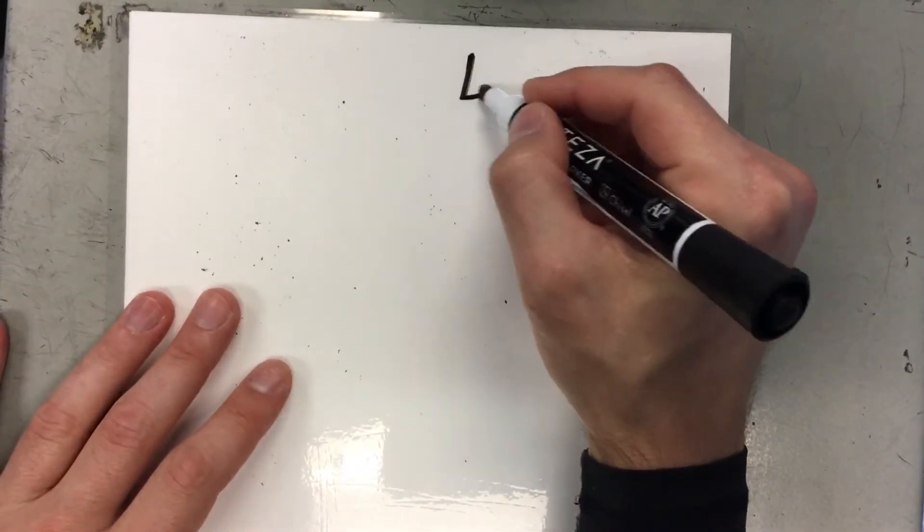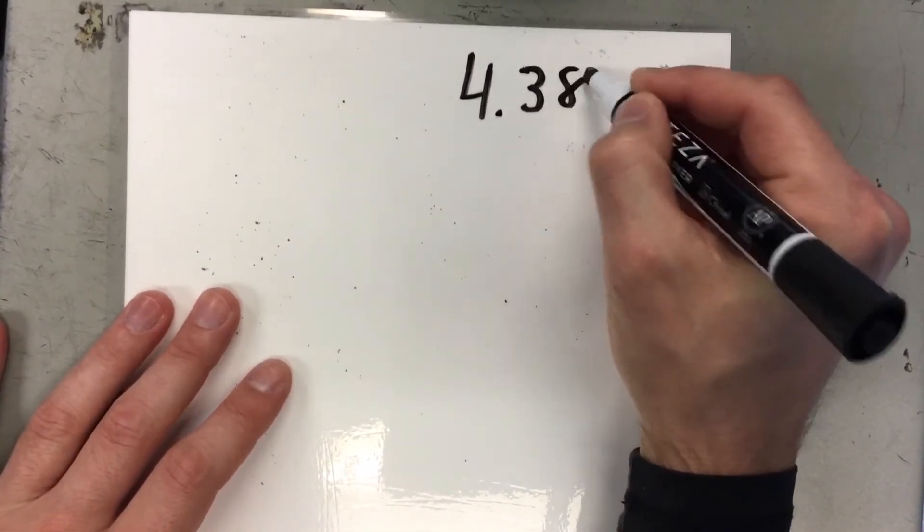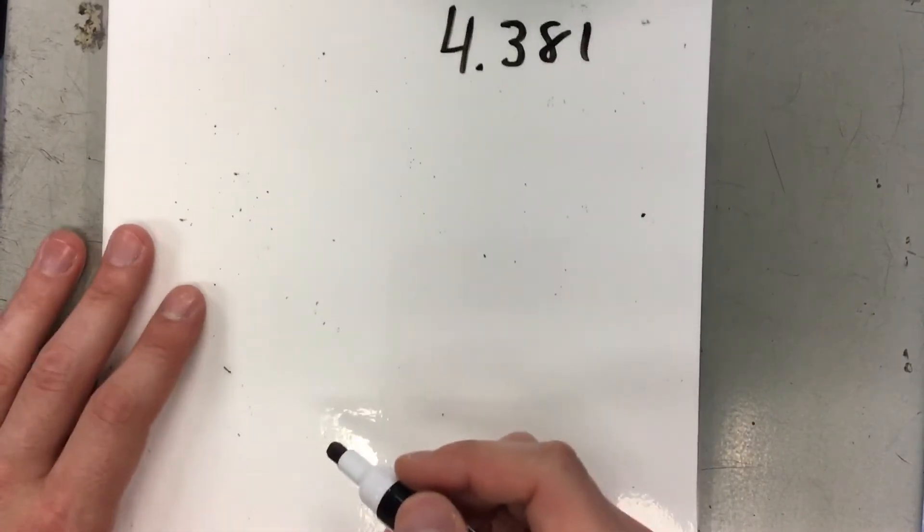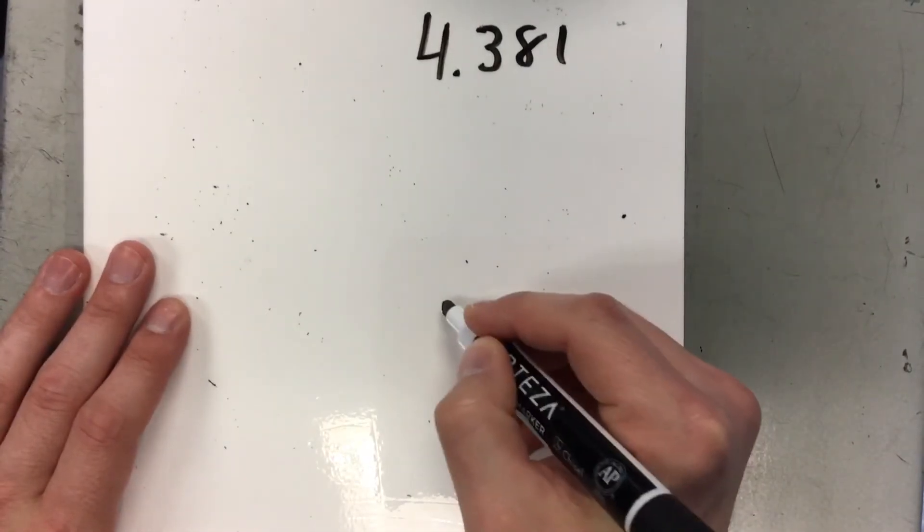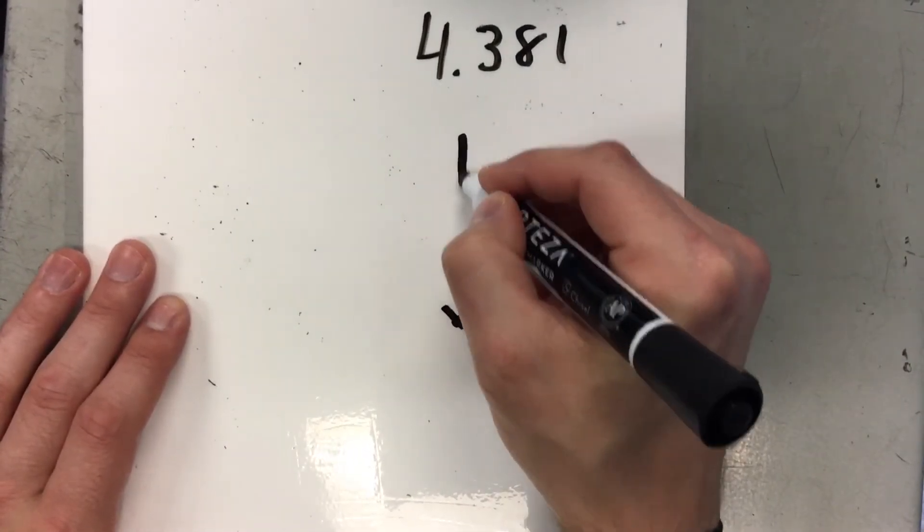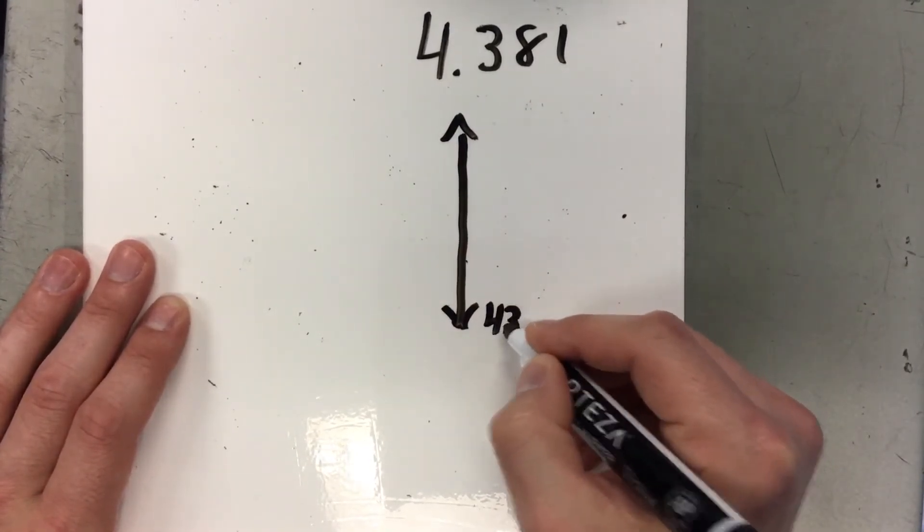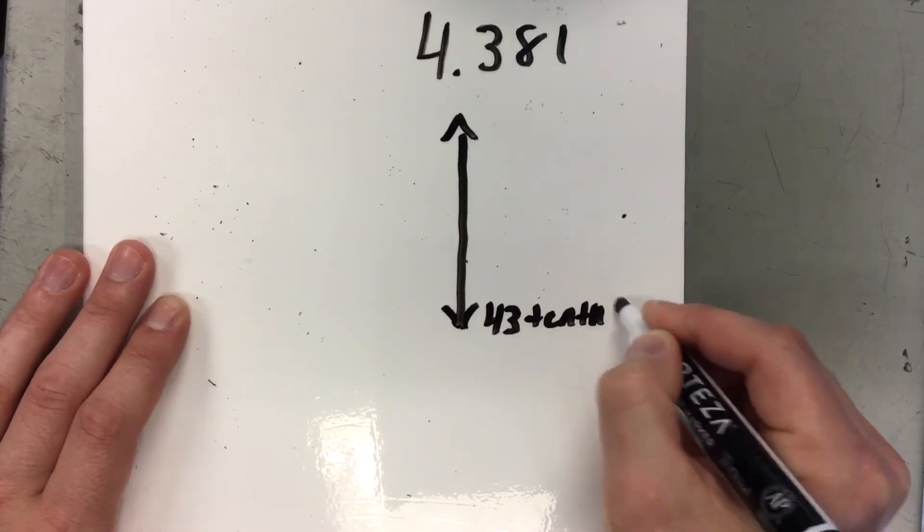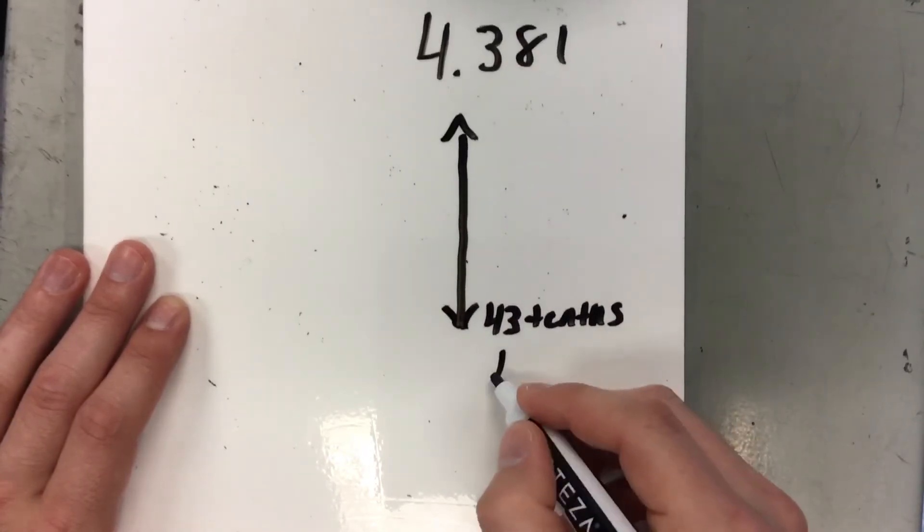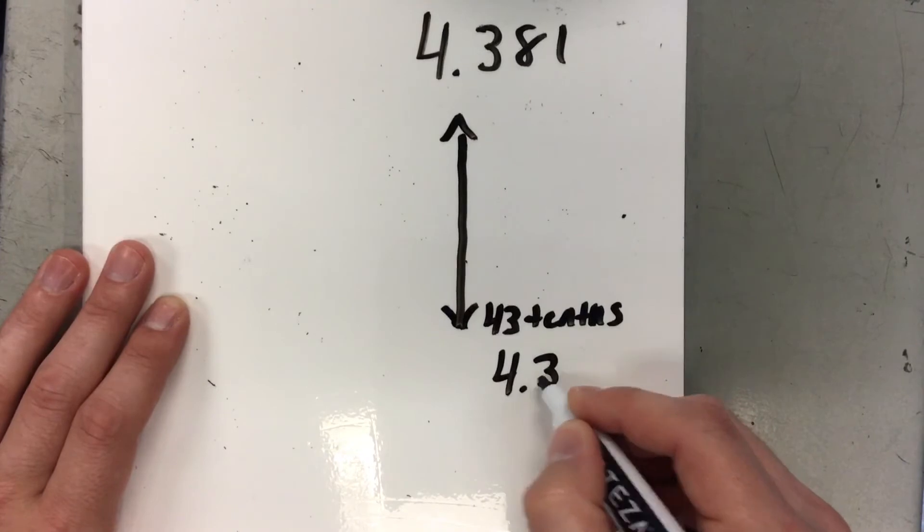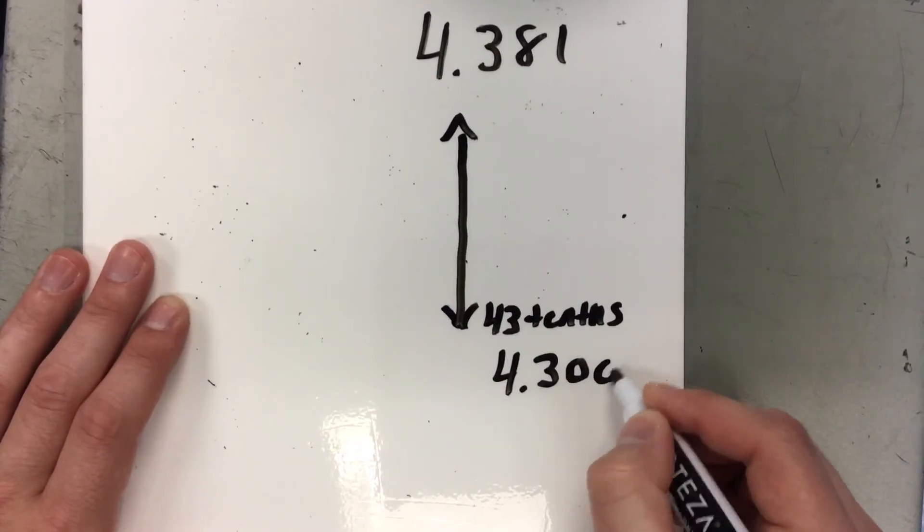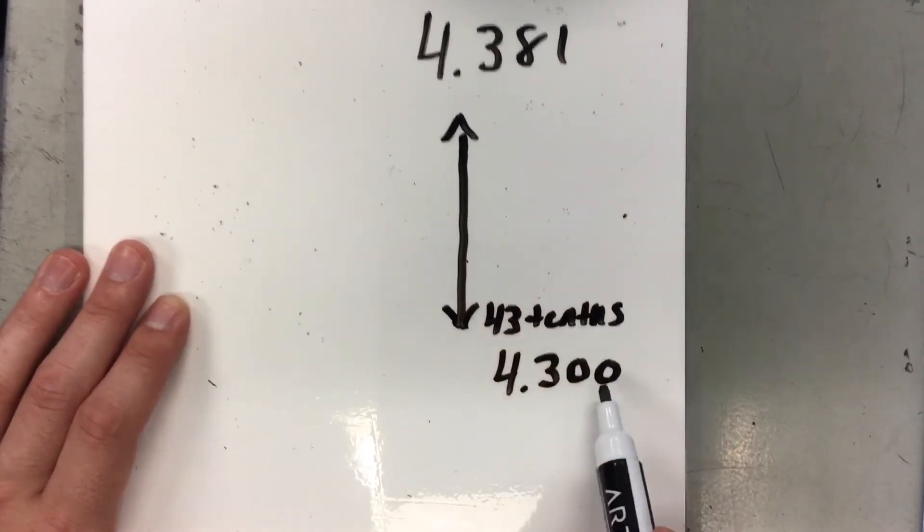So on my number line, I'm going to be rounding. I know that I can start with 43 tenths, which would be the same thing as 4.3. And I'm going to add two zeros since my number is in thousandths.